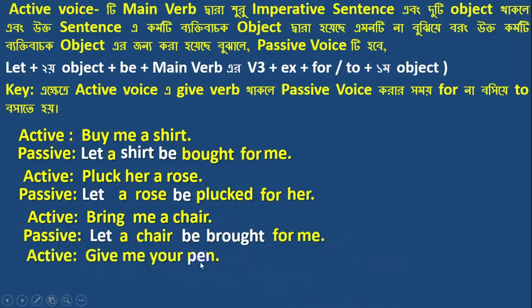Active voice: 'Give me your pen.' It is an imperative sentence. The main verb is 'give'. There are two objects: 'me' (indirect) and 'your pen' (direct). Give me your pen — now let's form the passive.